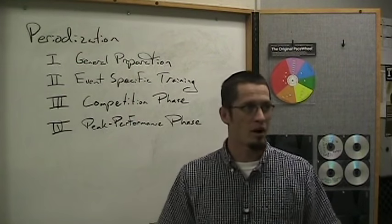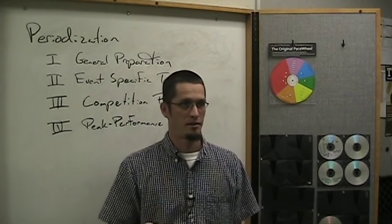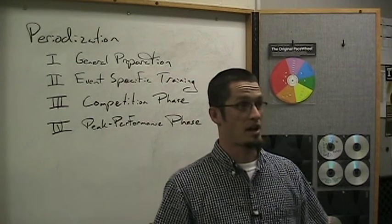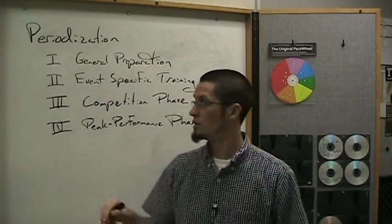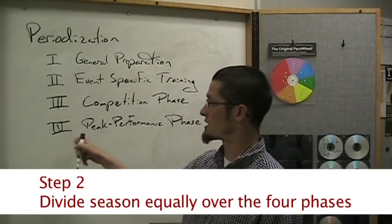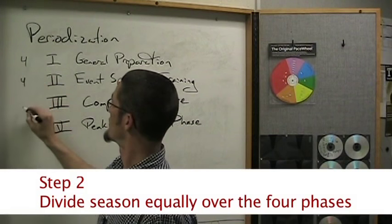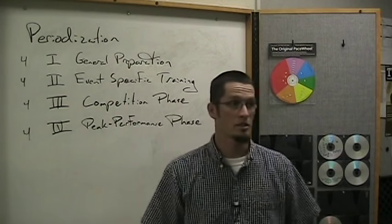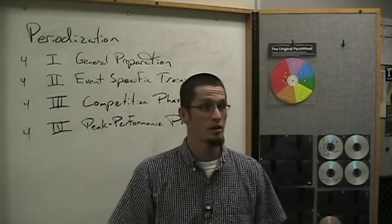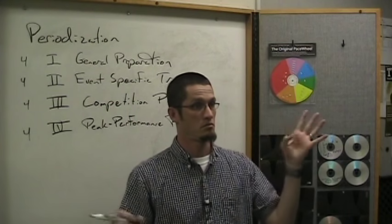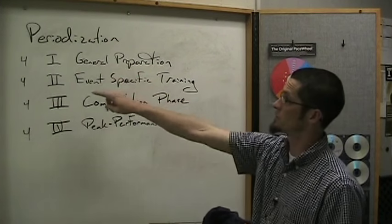High school seasons are generally 12 weeks long, which is not nearly enough. Jack Daniels says 24 weeks is a great season length. Let's pretend we've got a 16-week season as a happy medium. The first thing you do is divide it in four. If I've got 16 weeks until my championship race, each phase gets four weeks: four weeks of general prep, four weeks of event specific, four weeks of competition phase, and four weeks of peak performance — four weeks for each phase.